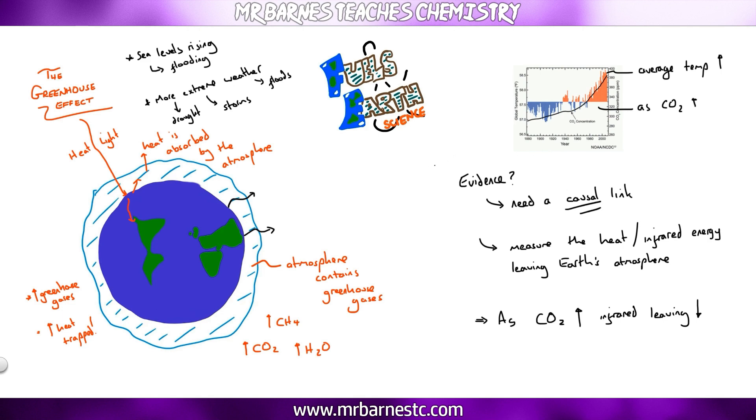You might also be asked how we're putting more greenhouse gases into the atmosphere. Nice and simply, farming increases the amount of methane. Mining fuels or ores increases the amount of CO2 and H2O produced. And combustion, CO2 given out.